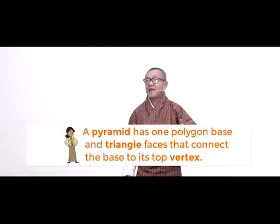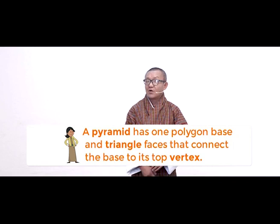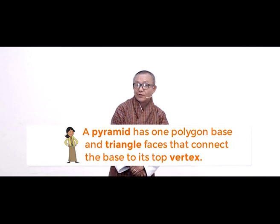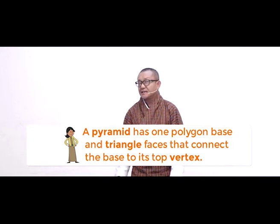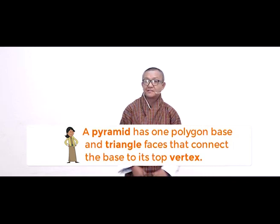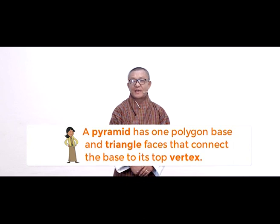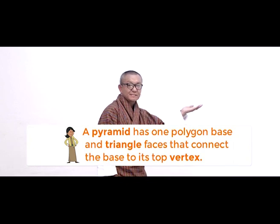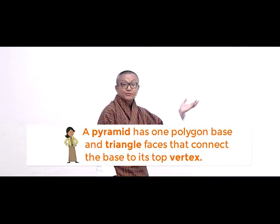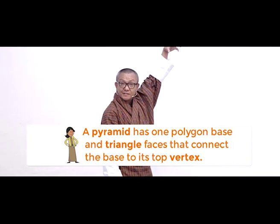This triangle connects the base square to the top vertex, and such a shape is called a pyramid. A pyramid has one polygon base and triangle faces that connect the base to its vertex. A pyramid is named by the shape of its base.